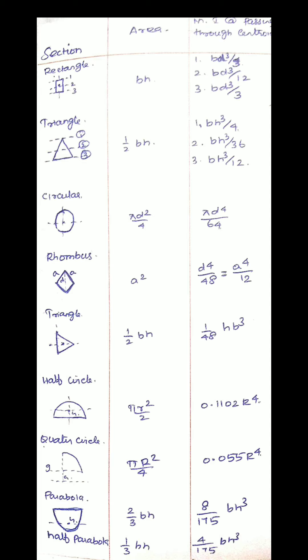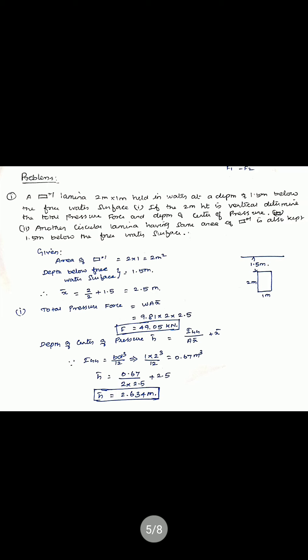For a triangle section: moment of inertia about the apex is bh³/4, about the centroid is bh³/36, and about the base is bh³/12. Similarly, for circular section, rhombus, isosceles triangle, half circle, quarter circle, parabola, and half parabola — the area and moment of inertia for each section are listed. I hope it is very useful.